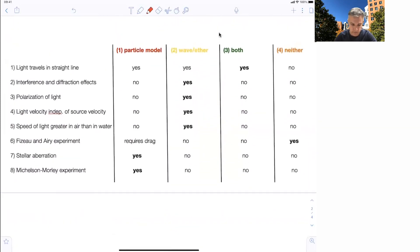For stellar aberration, the particle model actually seems to work as it was proposed, apparently, to solve this very problem. And the Michelson-Morley experiment also is consistent with the particle model.